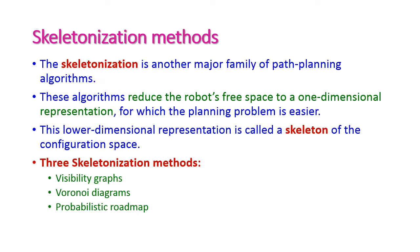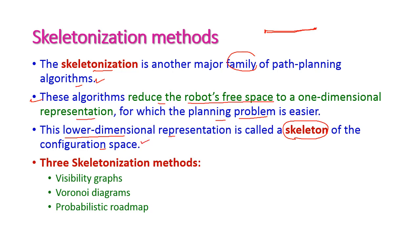Skeletonization is another important family of path planning algorithms. This algorithm reduces the robot's free space to a one-dimensional representation. In single dimension, we can easily plan the path. This lower-dimensional representation is called the skeleton of the configuration space — the higher dimension is reduced to lower dimensional space, making path finding easier. There are three methods: visibility graph, Voronoi diagrams, and probabilistic roadmap.